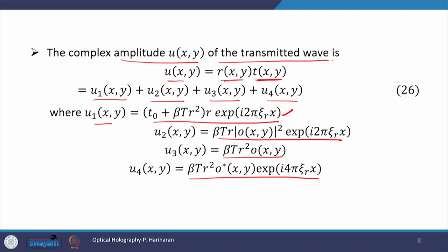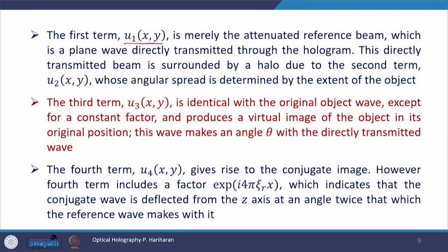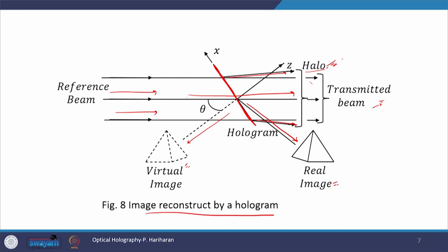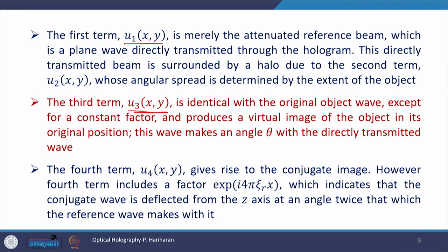In u1 you see that it is independent of O — it does not carry any information about the object, so it is not of interest. All other three terms contain O and can therefore form an image. The first term u1(x,y) is merely the attenuated reference beam, a plane wave directly transmitted through the hologram. This directly transmitted beam is surrounded by a halo due to the second term u2(x,y), whose angular spread is determined by the extent of the object. U2 contains |O| squared, and this is the term responsible for the halo seen around the transmitted beam.